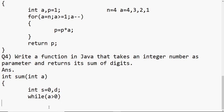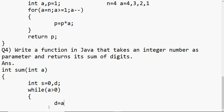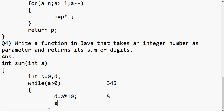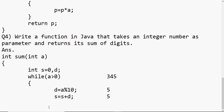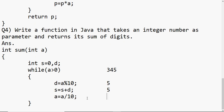The loop runs while my number a is greater than 0. To extract a digit from a number, you divide it by 10 and take the remainder. For example, 345 mod 10 gives remainder 5 — that's stored in d. Then s = s + d adds the digit to the sum, with s initially 0. To reduce the number by one digit, I write a = a / 10, which leaves 34. The process repeats: next iteration gives remainder 4, then the number becomes 3.